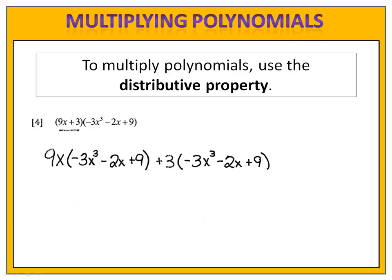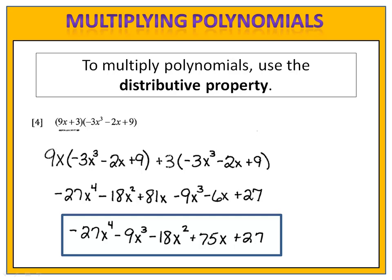We began by distributing the 9x and then we distributed the positive 3. We ended up with negative 27x to the 4th minus 18x squared plus 81x minus 9x to the 3rd minus 6x plus 27. We combine like terms and we have negative 27x to the 4th minus 9x to the 3rd minus 18x squared plus 75x plus 27.